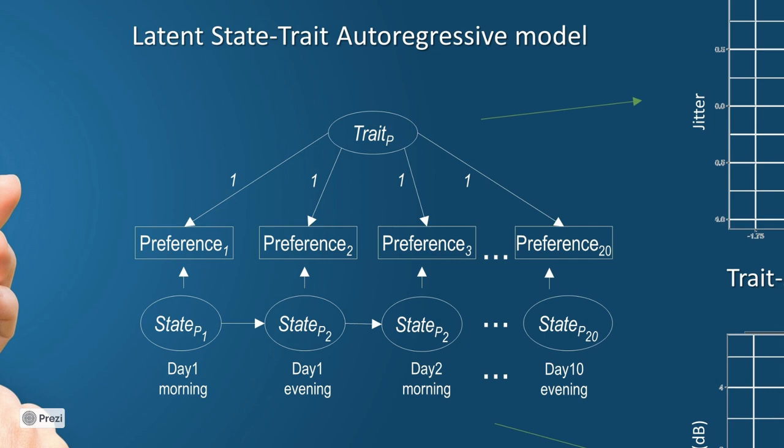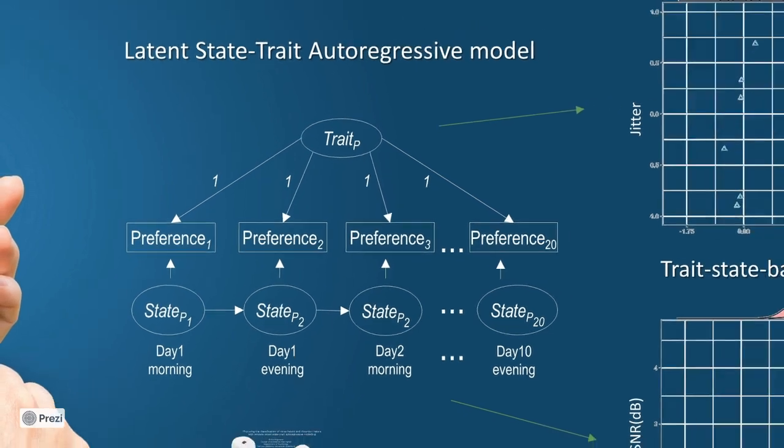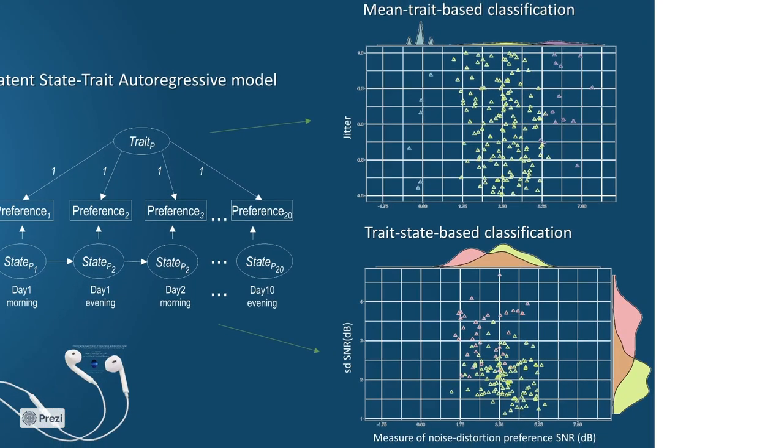Thanks to this model, we can decompose each observed variable into a latent trait, habitual listening preferences, and a latent state variable, which refers to situational variations. We then used this model for a data-driven classification of noise haters and distortion haters.